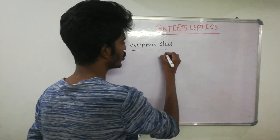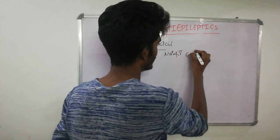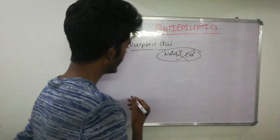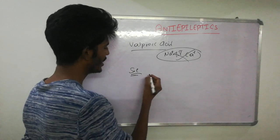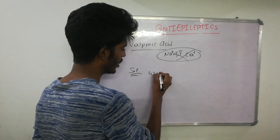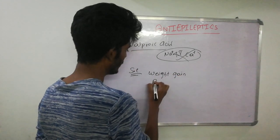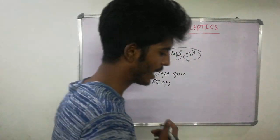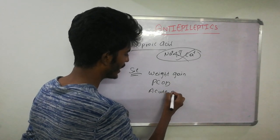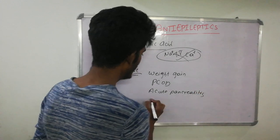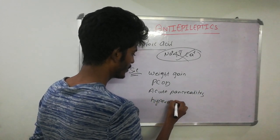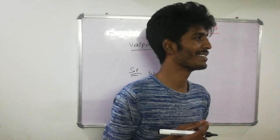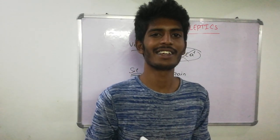Valproic acid blocks both sodium channels and T-type calcium channels. Regarding side effects: it will cause sleepiness, and importantly it causes weight gain. It may predispose a patient to PCOD, and it can cause acute pancreatitis and hyperammonemia. It also causes nausea and vomiting, which is a common side effect mentioned for most drugs.